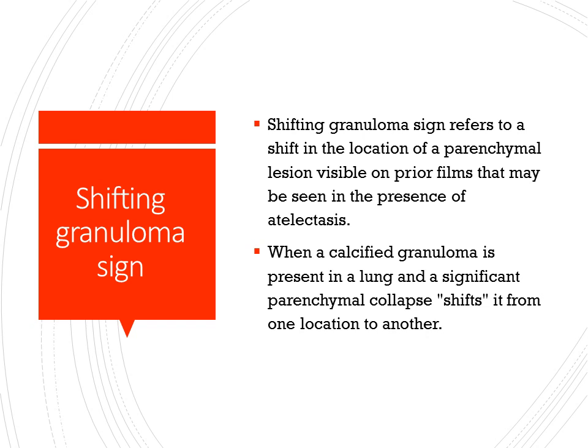The Shifting Granuloma Sign refers to a shift in the location of a parenchymal lesion visible on prior films that may be seen in the presence of atelectasis. When a calcified granuloma is present in a lung and a significant parenchymal collapse occurs, it shifts towards the hilum, and this is called the Shifting Granuloma Sign.